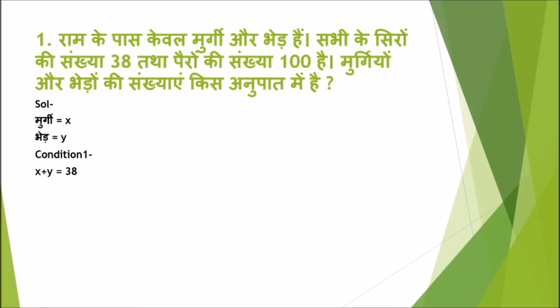तो x plus y equal to 38 — यह होगी हमारी equation 1। दूसरी condition है पैरों की संख्या 100। हमारे पास कुल जो मुर्गियाँ हैं वो हैं x, और हर एक मुर्गी के 2 पैर होंगे तो x मुर्गियों के हो जाएंगे 2x पैर। और वैसे ही हमारे पास कुल भेड़ें हैं y और हर एक भेड़ के 4 पैर होते हैं, यानि y भेड़ों के हो जाएंगे 4y। तो 2x + 4y = 100।